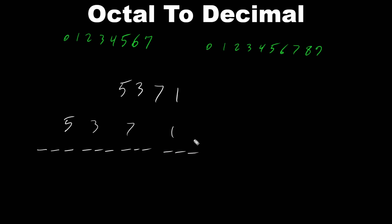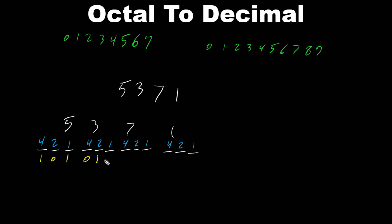Let's put the decimal values 1, 2, 4 for each octal digit. For 5, which bits do we turn on? 4 and 1. For 3, which bits turn on? 2 and 1. For 7, all of them turn on. For 1, only the 1 bit turns on.